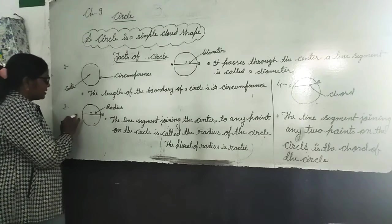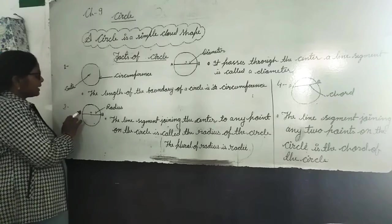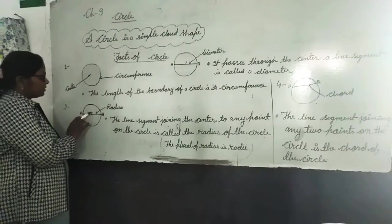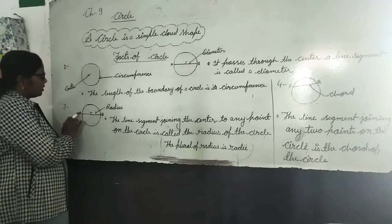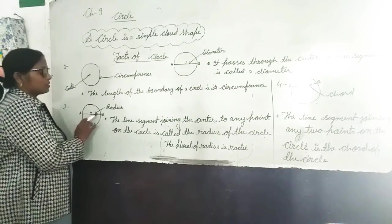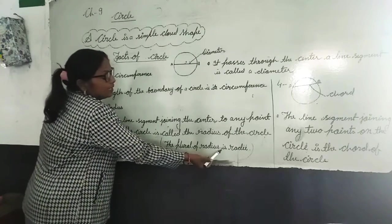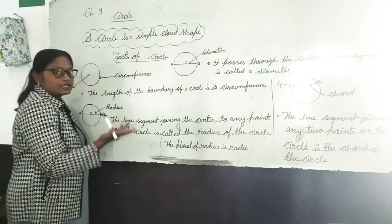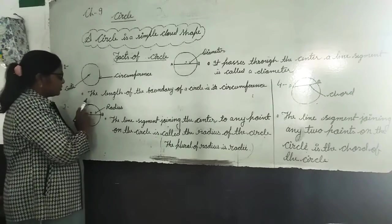What about O to A? O to A is also a radius. So we have two radii: OA and OB. The plural of radius is radii.